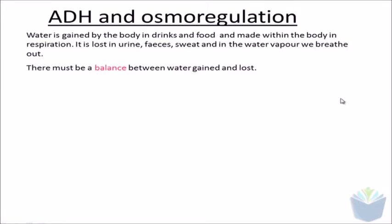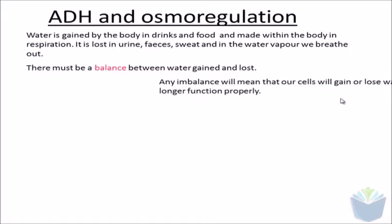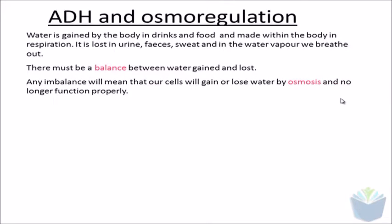There needs to be a balance between water gained and water lost. If there is an imbalance, then it might cause our cells to either gain or lose water through osmosis. Remember that osmosis is the movement of water across a partially permeable membrane — basically from an area where there's lots of water to an area where there's less water.